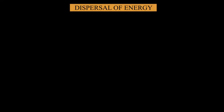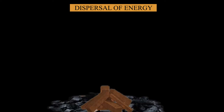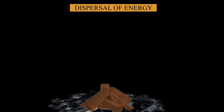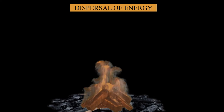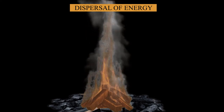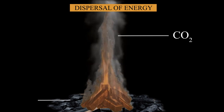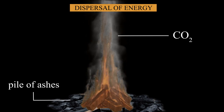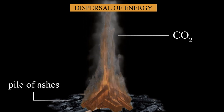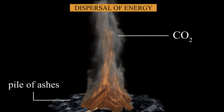Let us see how dispersal of energy contributes to entropy change. The example of burning wood illustrates an increase in entropy. The wood starts as a single solid object. Fire consumes the wood, releasing energy along with carbon dioxide and leaving a pile of ashes. The atoms in the gases vibrate, resulting in an increase in entropy.